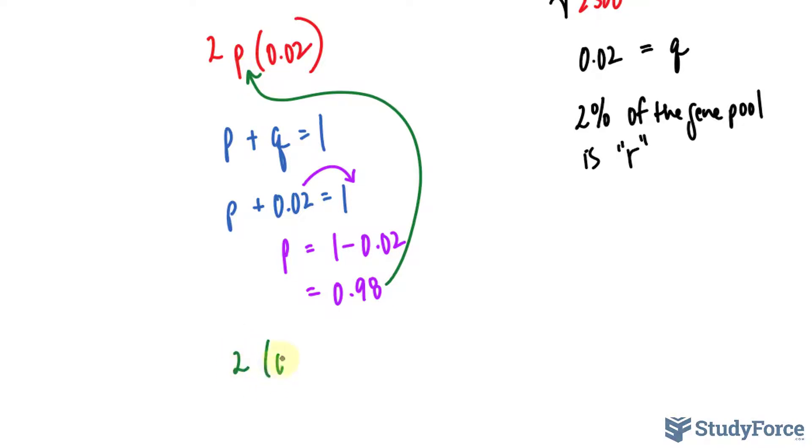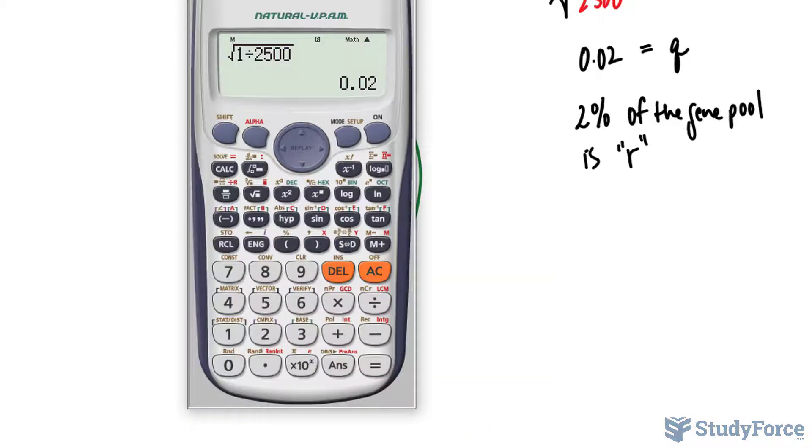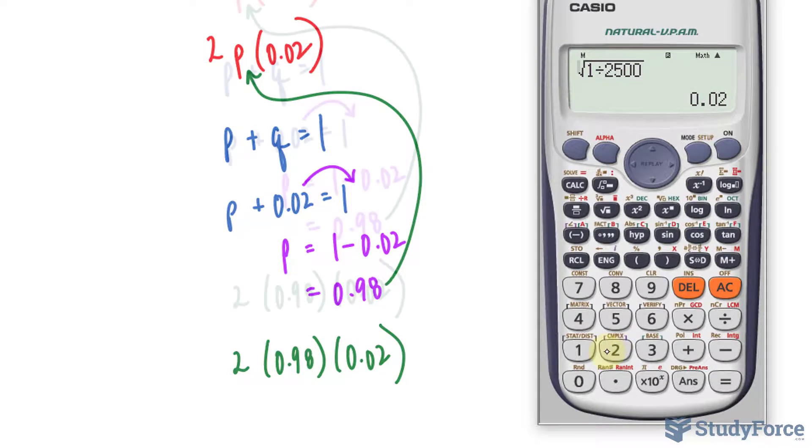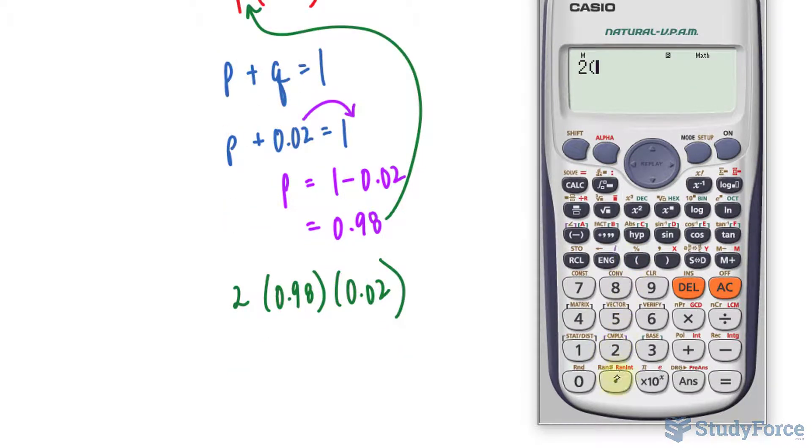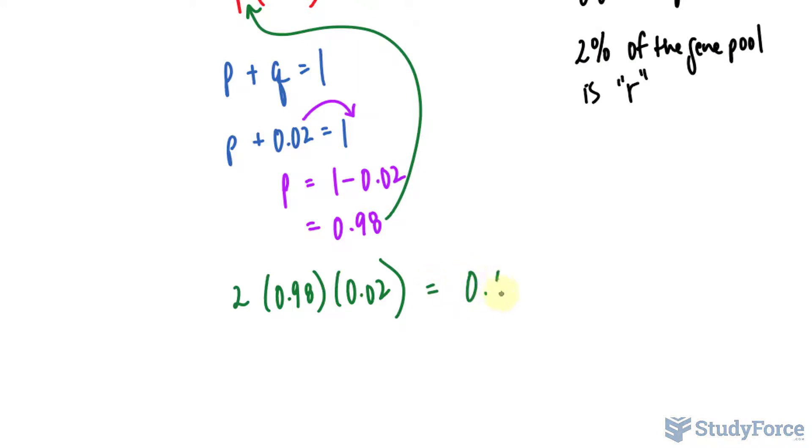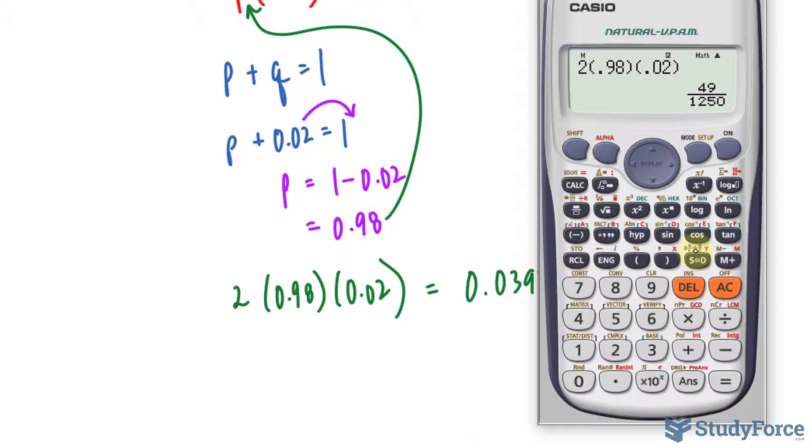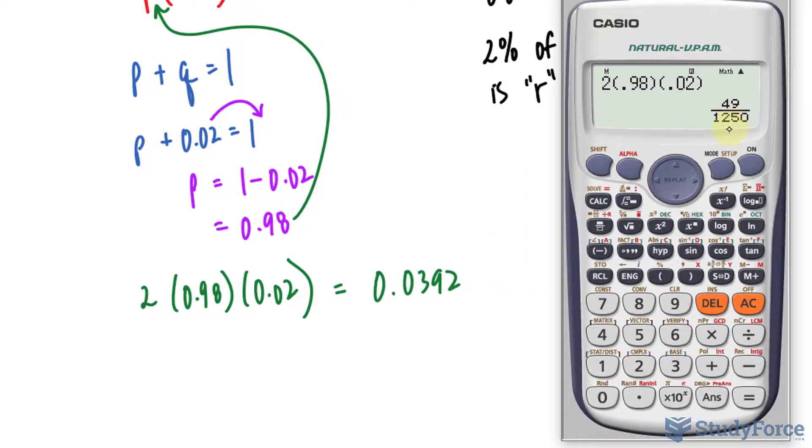So I have 2 times 0.98 times 0.02. And this will give us the proportion of the population that are carriers. Using our calculator, we'll take 2 times 0.98 times 0.02 and we end up with a number of 0.0392. If you make this into a fraction, you end up with 49 over 1,250.